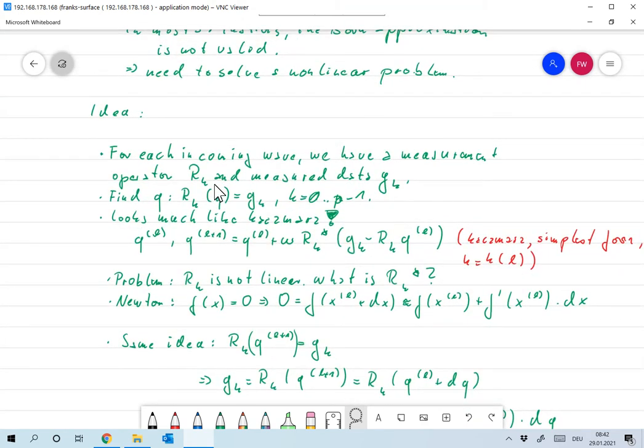So let me sum this up in the following way. First, in our inverse scattering problem for each incoming wave we had a measurement operator RK and measured data GK, so that already looks a little bit like the Radon situation. We had several operators for each position of the x-ray source, and now we have different measurement operators for each incoming wave and for each one data is measured.